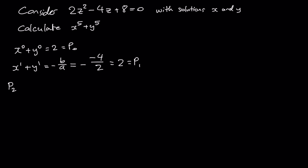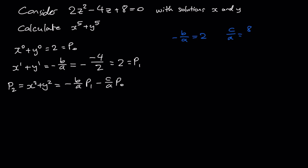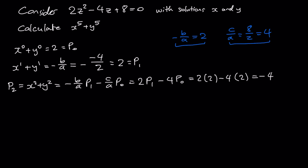Using the Girard-Newton formula, P2 equals minus b over a times P1, minus c over a times P0. For this quadratic, minus b over a equals 2 and c over a equals 8 over 2 equals 4. So P2 equals 2 times P1, minus 4 times P0, which is 2 times 2 minus 4 times 2, giving minus 4.